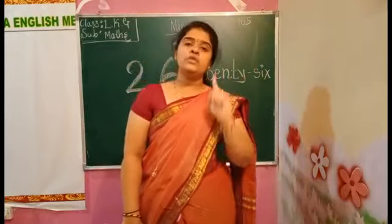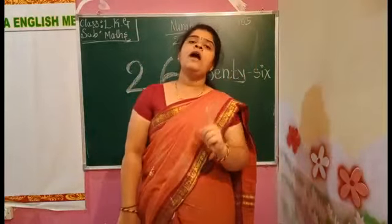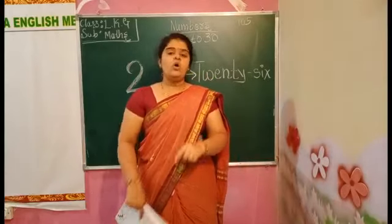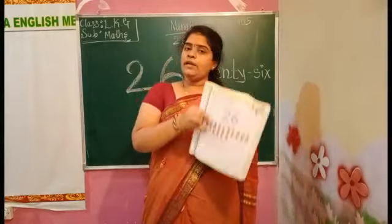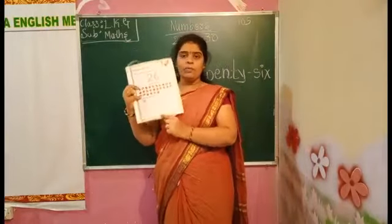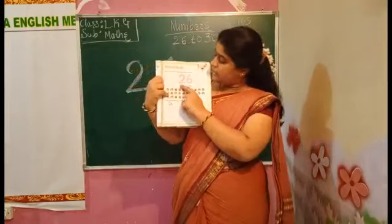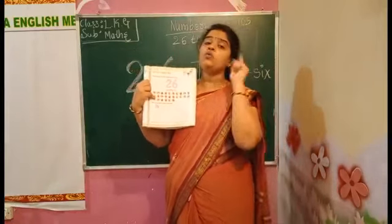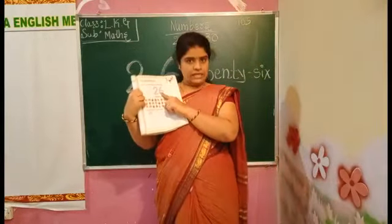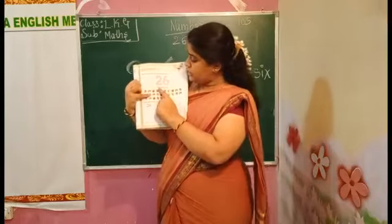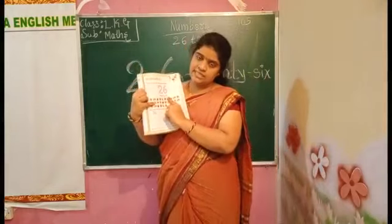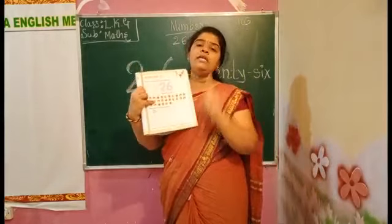Like this we have to read the number 26. Page number 105 — here they are given a number. You have to say, children: 2, 6, 26. T-W-E-N-T-Y-S-I-X. 26. You have to read like this.